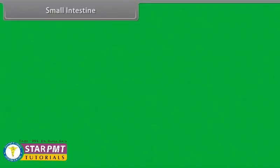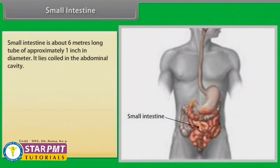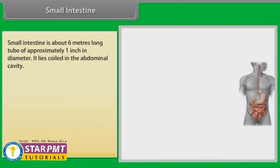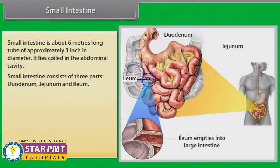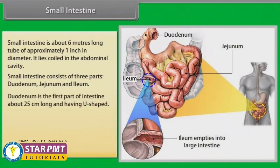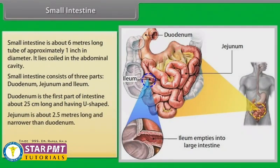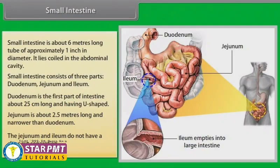The small intestine is about 6 meters long and approximately 1 inch in diameter, lying coiled in the abdominal cavity. It consists of three parts: the duodenum, which is the first part about 25 centimeters long and U-shaped; the jejunum, about 2.5 meters long and narrower than the duodenum; and the ileum, which does not have a clear-cut separation from the jejunum.